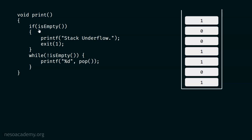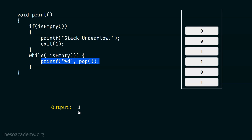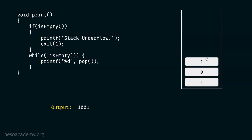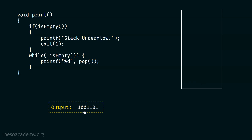In the print function, I first check if the stack is empty. If the stack is empty, I print 'stack underflow' and exit with failure status. Otherwise, I execute a while loop: while the stack is not empty, pop an element and print it. This way we get all values out of the stack in reverse order, eventually producing the output 1001101 on the screen.